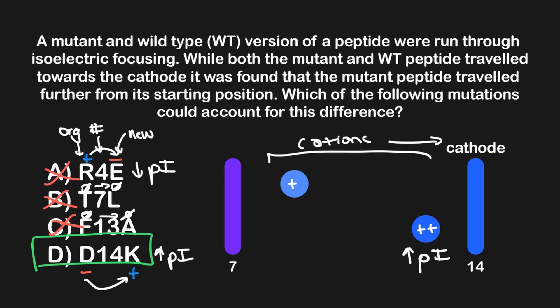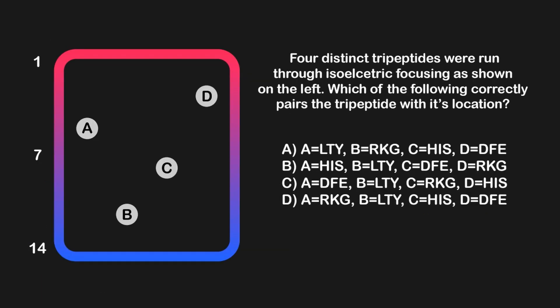Now that we've answered this question, let's go ahead and look at another. This question states, four distinct tripeptides were run through isoelectric focusing as shown on the left. Which of the following correctly pairs the tripeptide with its location?